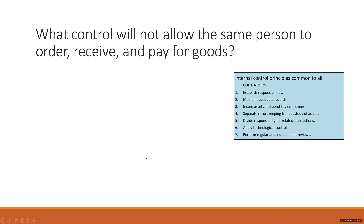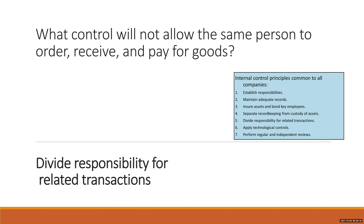Next question: what control will not allow the same person to order, receive, and pay for goods? That is divide responsibility for related transactions — correct. Remember the college Dean who could order, receive the goods, receive the invoice, and then swap it out so it looked like a college purchase. If he wasn't responsible for every step, he probably wouldn't have been able to do it.